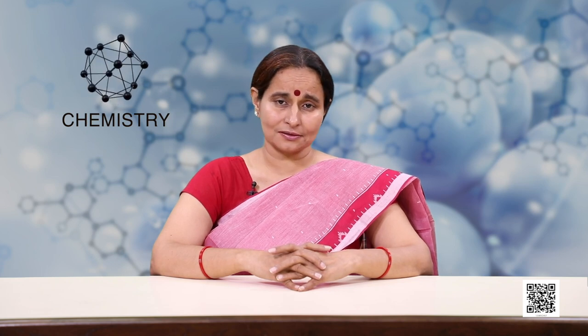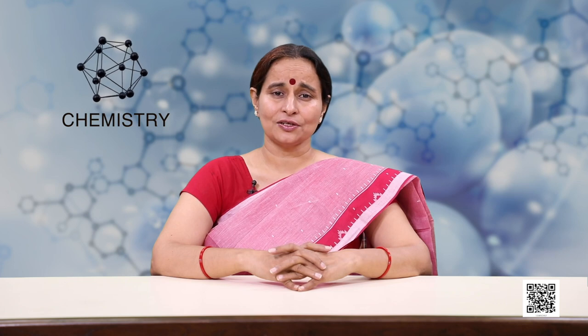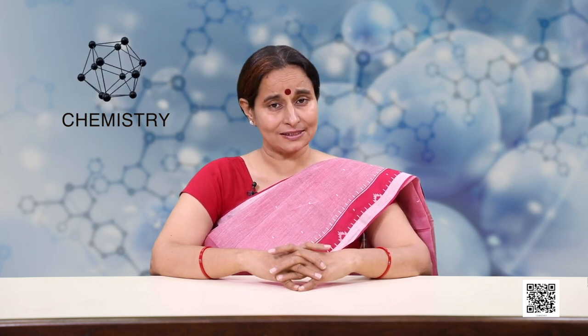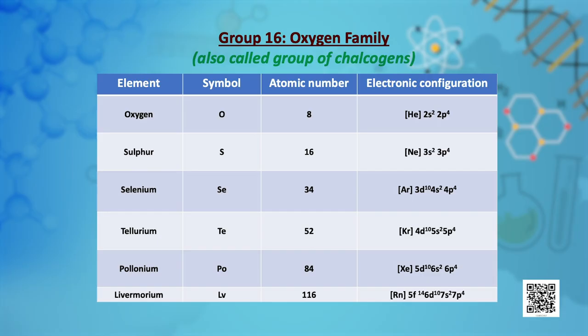All members of this family tend to follow a general trend in properties. The elements of group 16 have 6 electrons in the outermost shell and have ns2 np4 as their general outer electronic configuration.